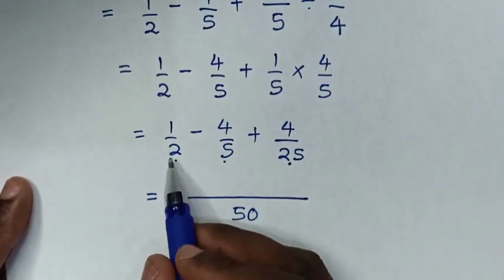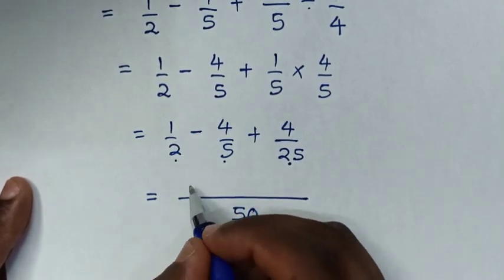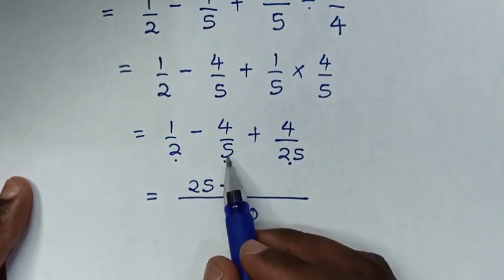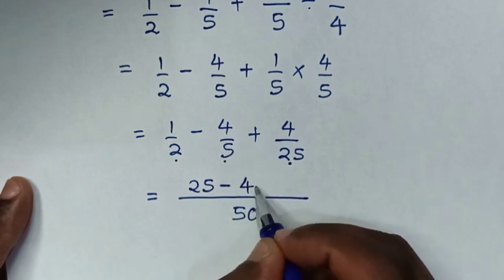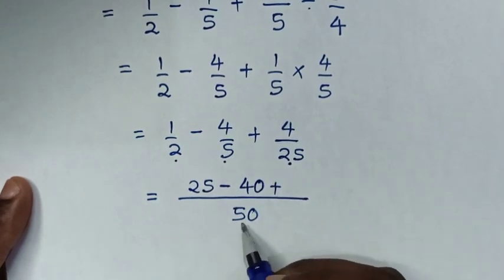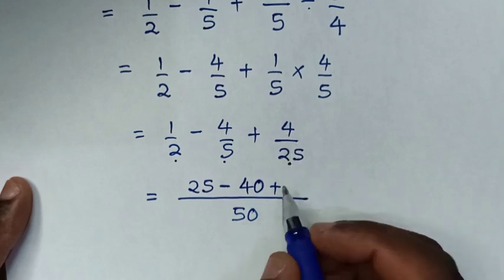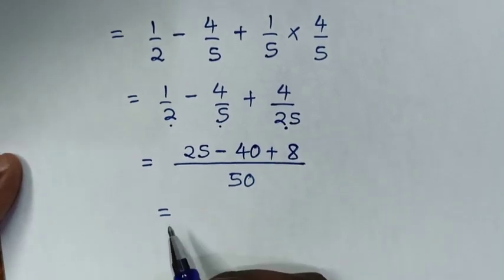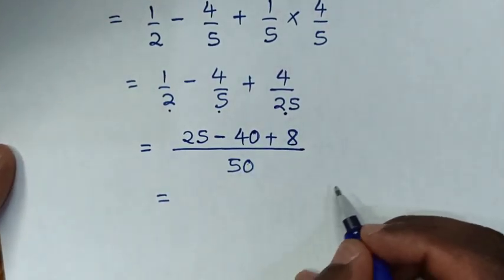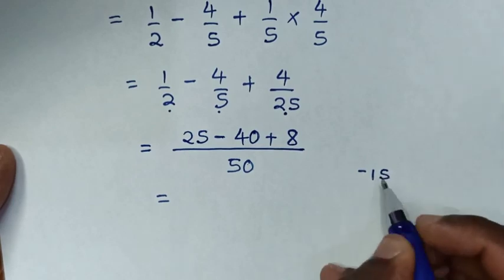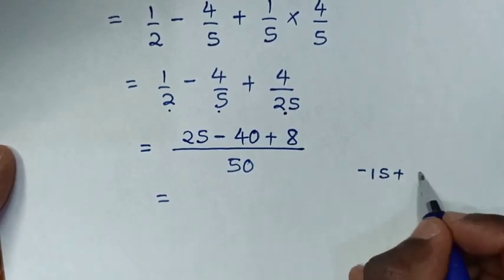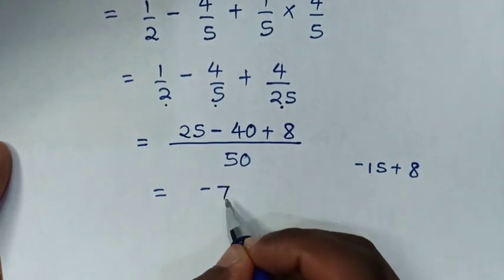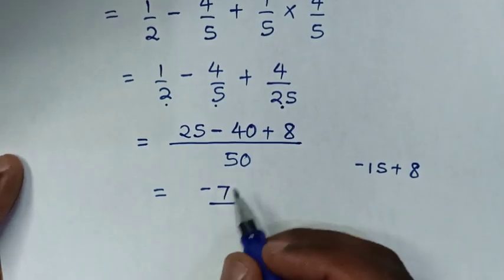Then 50 divided by 2 is 25, times 1 is 25. Then minus 50 divided by 5 is 10, 10 times 4 is 40. Then plus 50 divided by 25 is 2, 2 times 4 is 8. Then it will be equal to 25 minus 40 is negative 15, then plus 8. So negative 15 plus 8 is negative 7, over 50.